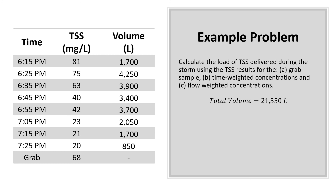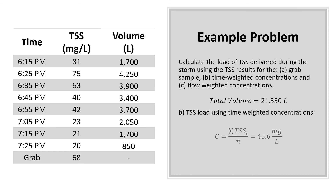Next, we will calculate the load of TSS using a time-weighted concentration, which is comparable to creating a composite sample using the time-proportional approach. For this method, each sample concentration is given equal weight regardless of the volume of flow. The average concentration during this event is 45.6 milligrams per liter. By multiplying by the total volume of the event, we get a TSS load of 0.98 kilograms — approximately 33% lower than the load estimated using only the grab sample.